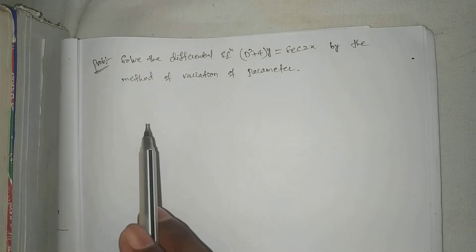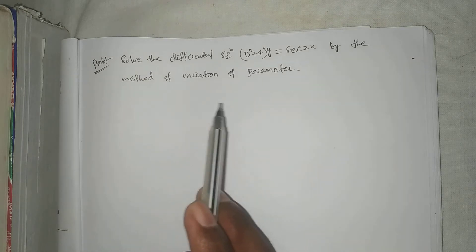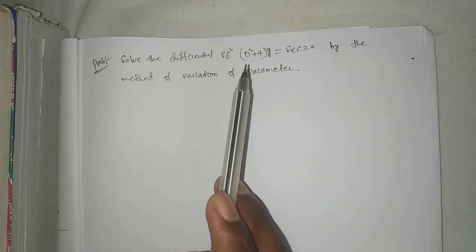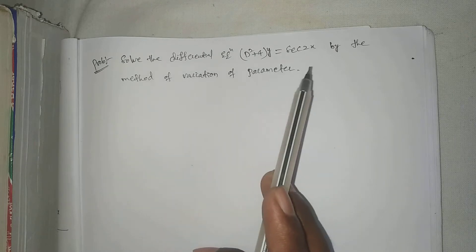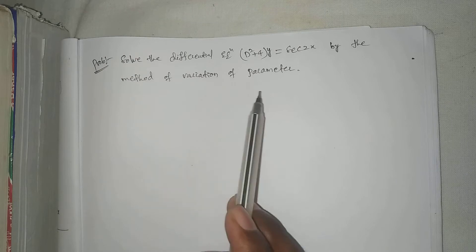Right, welcome to Rajasri Karu. Today our topic is method of variation of parameter problem. Solve the differential equation d square plus 4 into y equal to secant 2x by the method of variation of parameter.